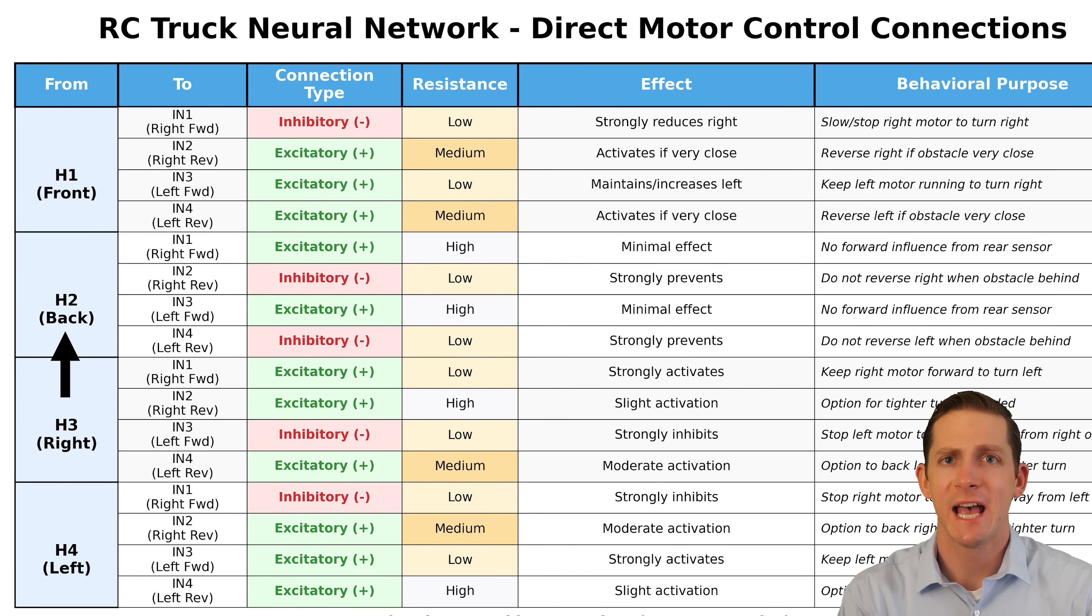If the back sensor is activated, we mostly want to inhibit the vehicle from going in reverse. When right is activated, we want the right forward side on and the left side off. When left is on, we want left forward on and right forward off. Having the opposite sides reverse can be helpful.